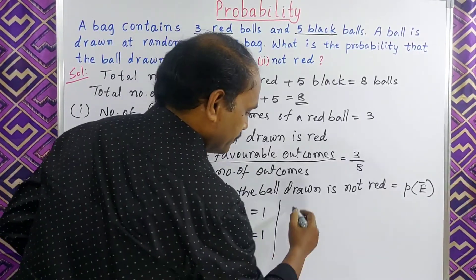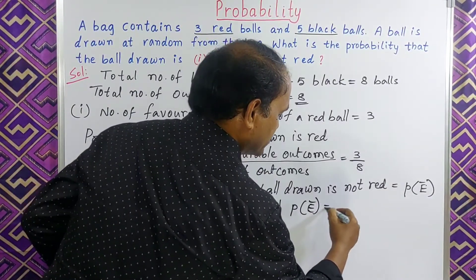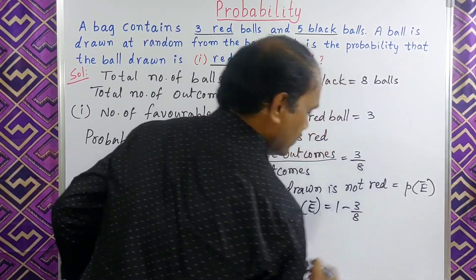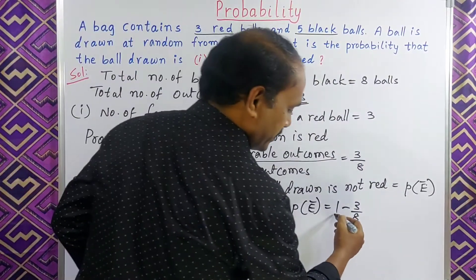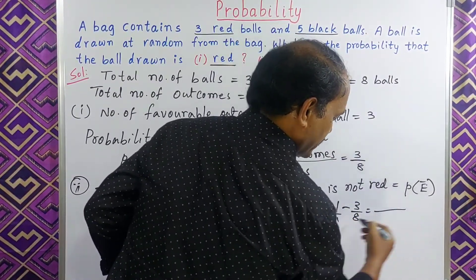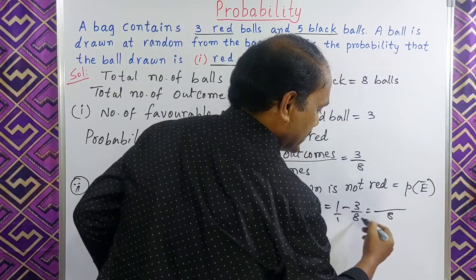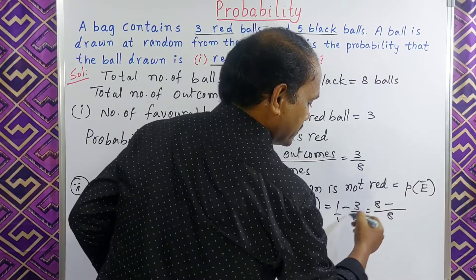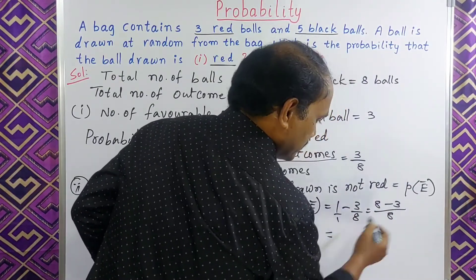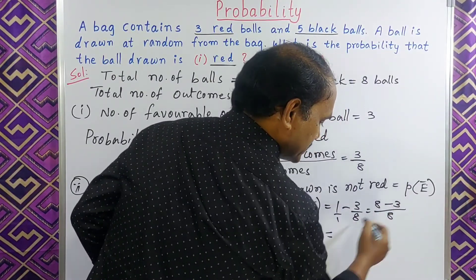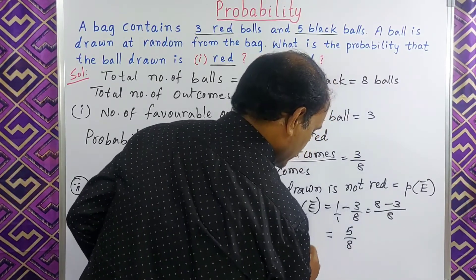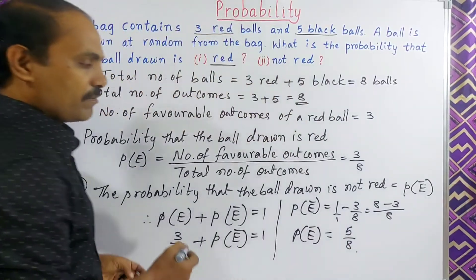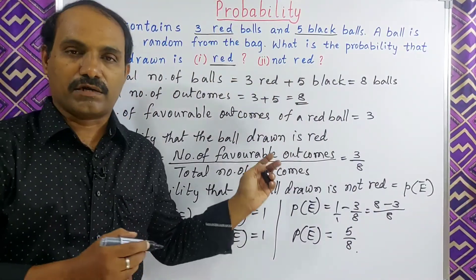Then P of E bar is equal to 1 minus 3 by 8. Taking LCM: 8 times 1 minus 3, which gives 8 minus 3 equals 5. So P of E bar equals 5 by 8. This is P of E bar — the probability that the ball drawn is not red.